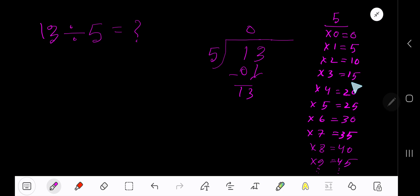5 goes into 13 how many times? 3 times 15, which is greater. So consider 2 times. That gives us 10. Subtract. You are getting 3. So our answer is 2, remainder 3.